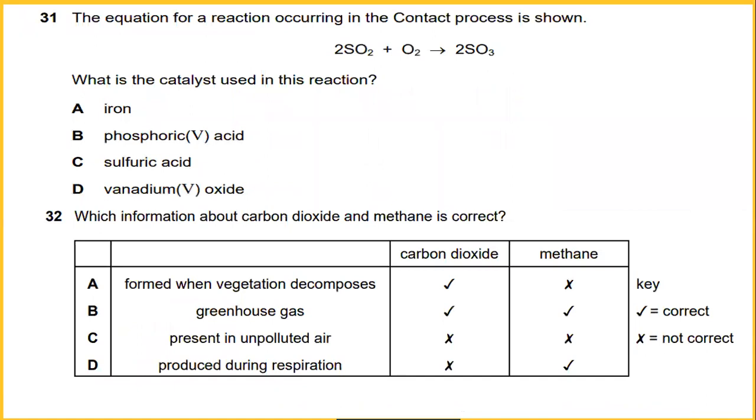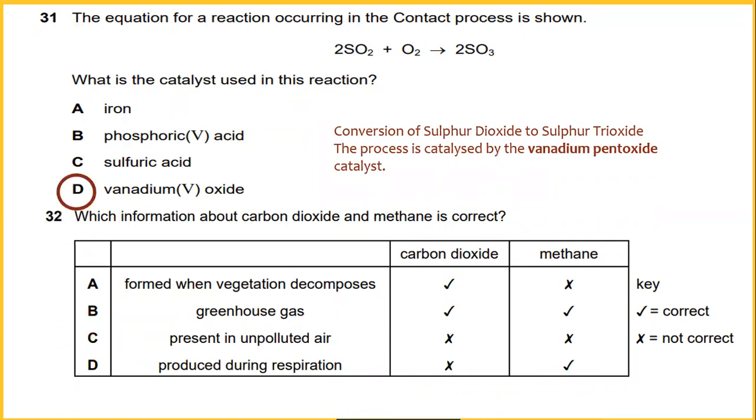The equations for the reaction occurring in the contact process is shown: 2SO2 plus O2 to form 2SO3. What is the catalyst used in this reaction? I would say the conversion of sulfur dioxide to sulfur trioxide. The process is catalyzed by the vanadium pentoxide catalyst. So in this case, vanadium is a catalyst.